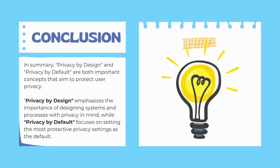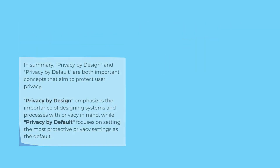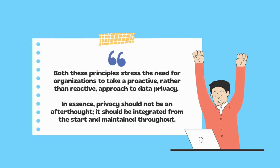In conclusion, privacy by design and privacy by default are both important concepts that aim to protect users' privacy. Privacy by design emphasizes the importance of designing systems and processes with privacy in mind, while privacy by default focuses on setting the most protective privacy settings as the default. Both principles stress the need for organizations to take a proactive rather than reactive approach to data privacy. In essence, privacy should not be an afterthought — it should be integrated from the start and maintained throughout.